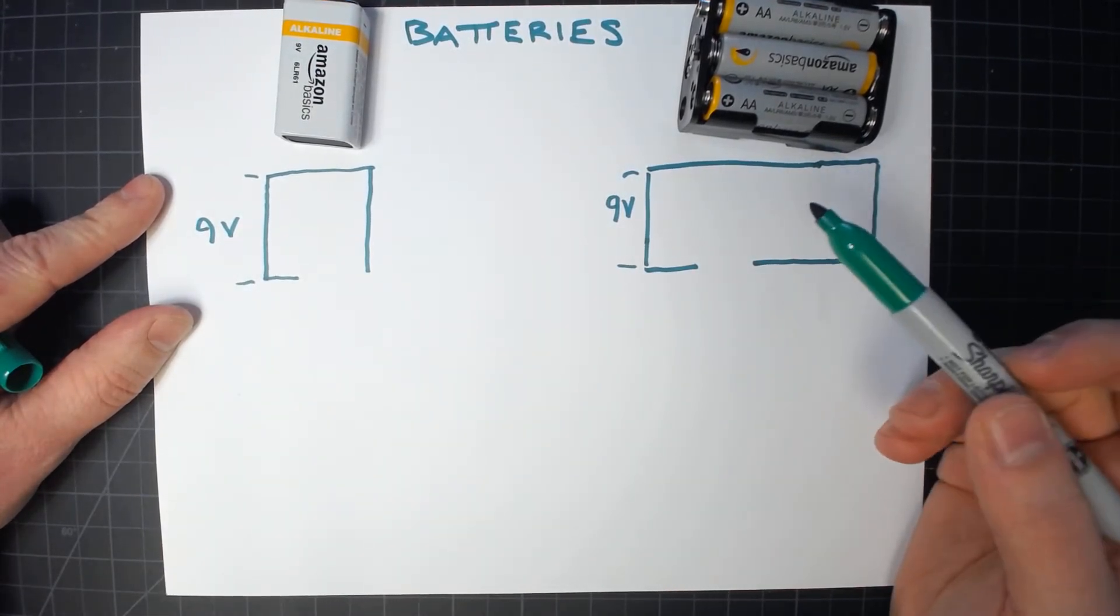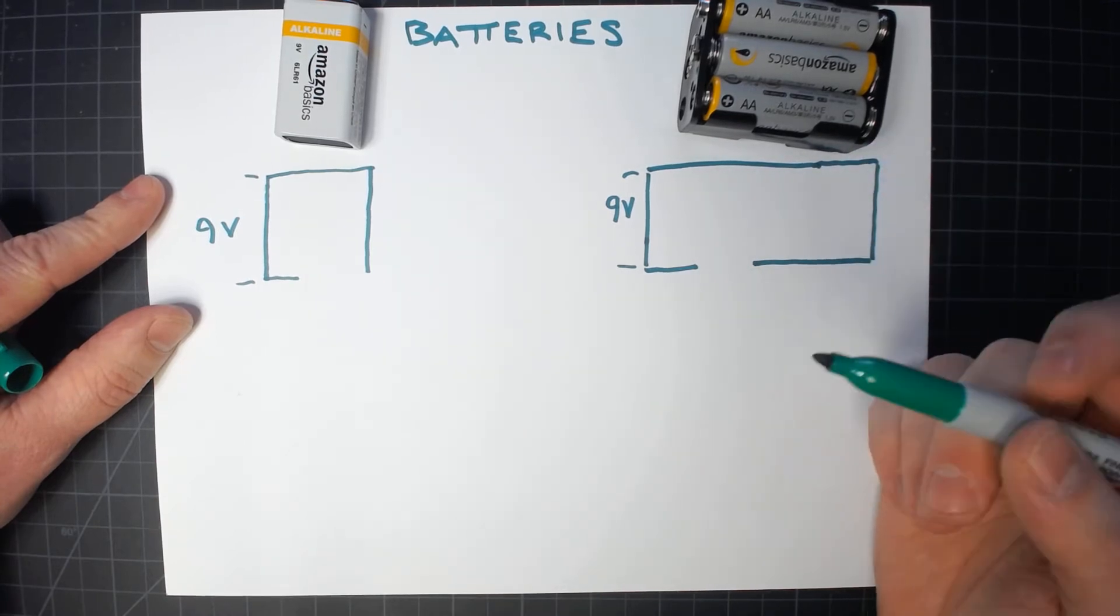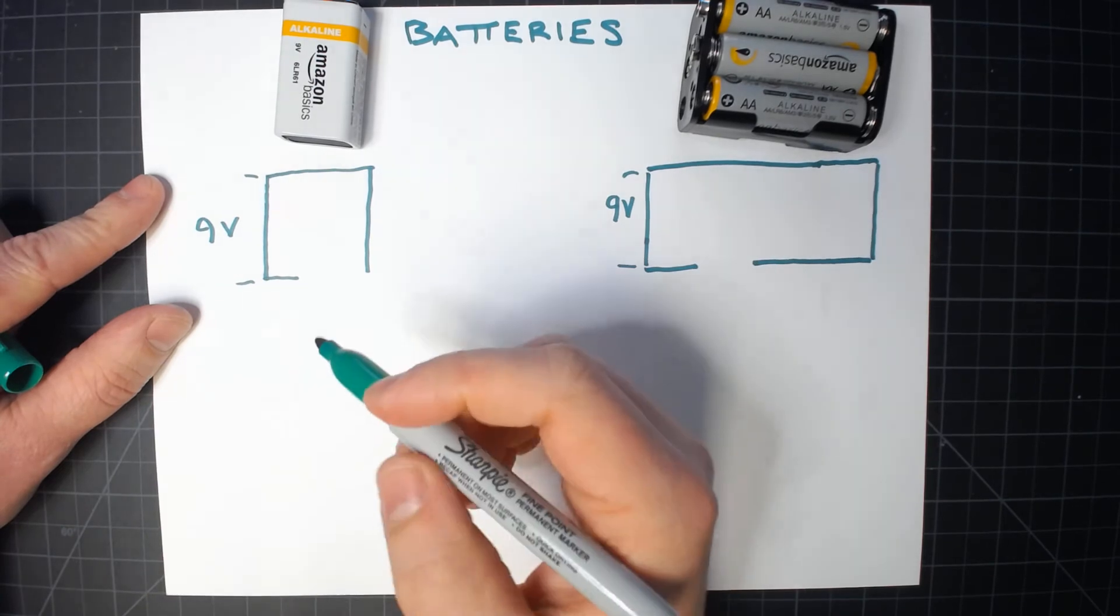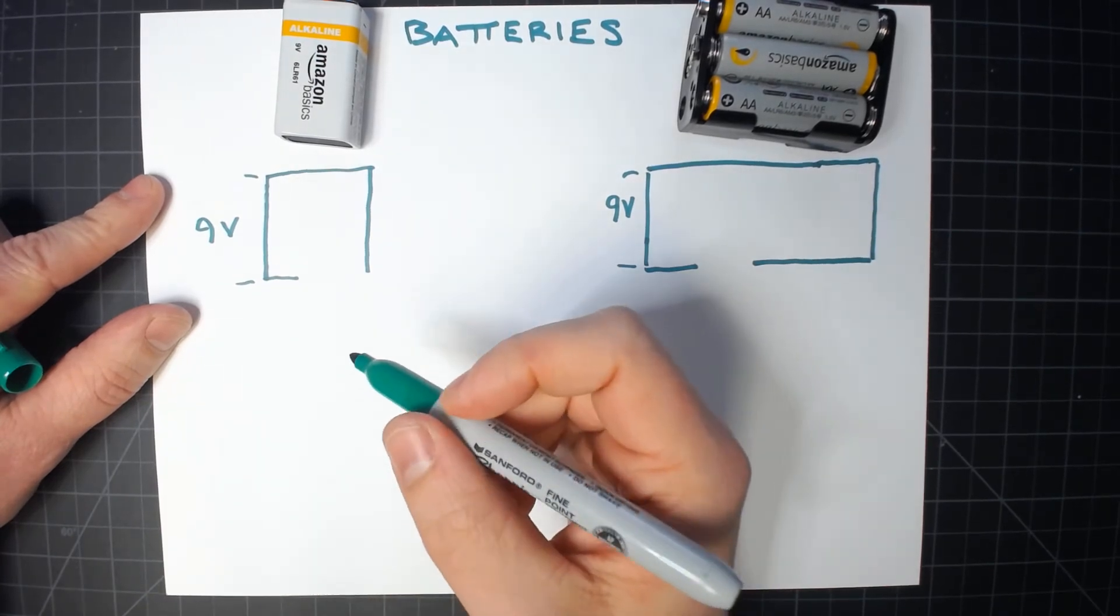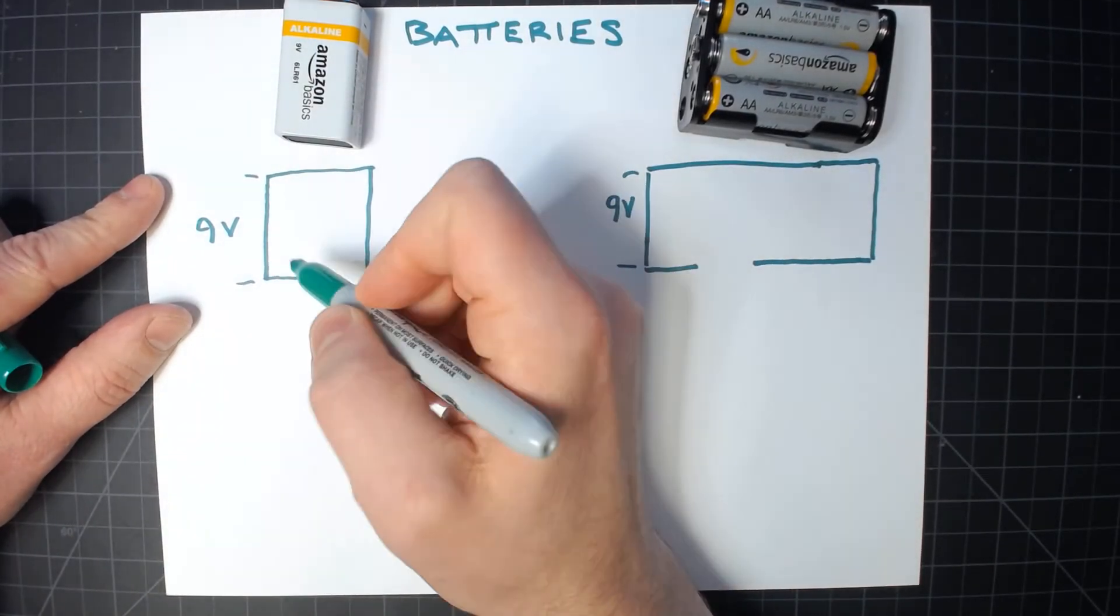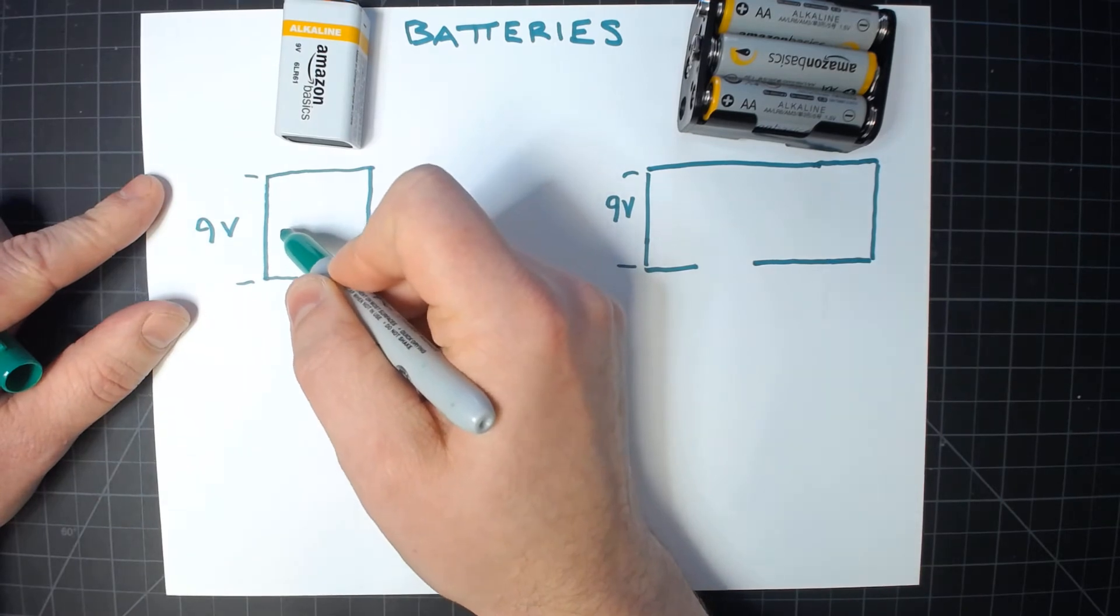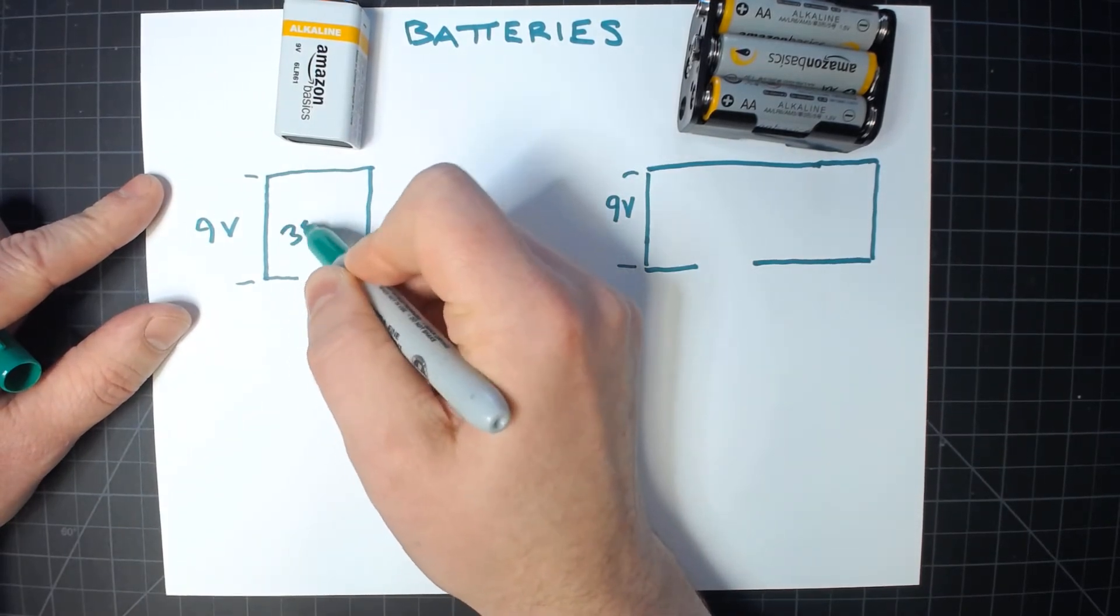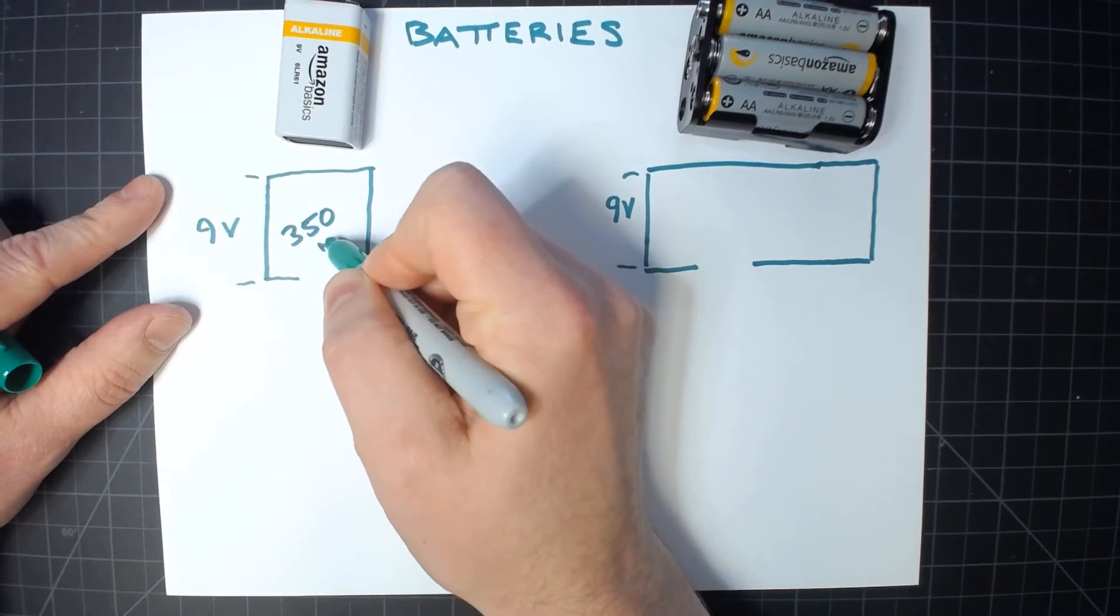It's not just because of physical size. It also has to do with chemical makeup and a few other things. But normally battery capacity is rated in something called milliamp hours. So most 9 volts are in the 300 to 500 milliamp hour range. So we'll just call this 350 milliamp hours.